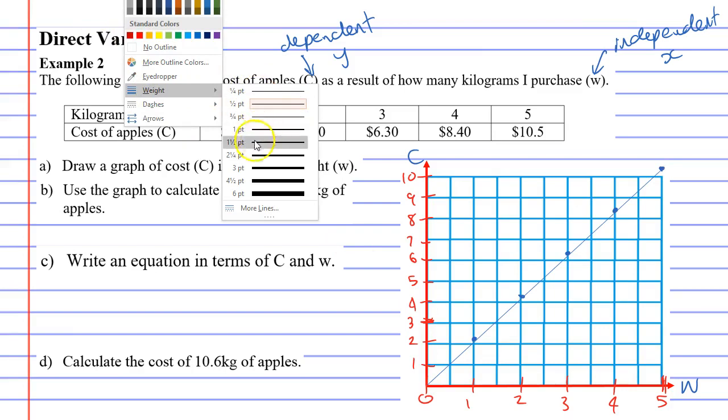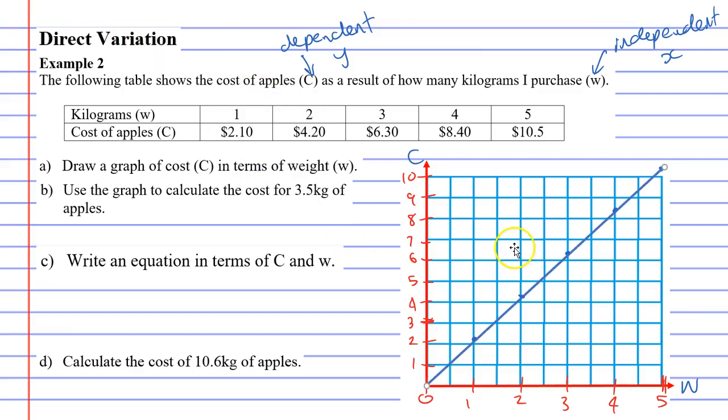The reason I know that is because direct variation will always meet at the origin. And you can see that when you think of the examples we've been doing. If I buy zero kilograms of fruit, I will get $0, meaning it will meet at the point 0,0. If I work zero hours, I will get $0. All direct variation questions should meet at the origin. If they don't, it is not direct variation. We should put a line here because it does go on forever.